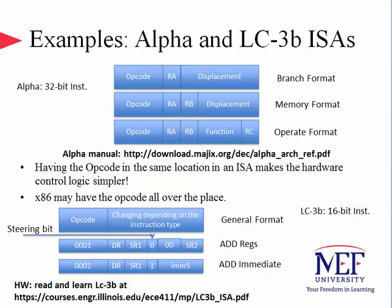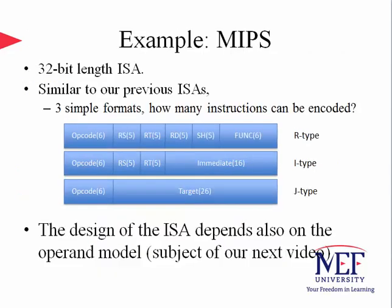Another RISC ISA is the 32-bit MIPS architecture. It has three simple formats — register, immediate, and jump — with an opcode of 6 bits. The shift amount (SH) field specifies the number of positions for shift operations. The immediate field can be used with branching operations, and the target field can update the program counter value to jump to another location. The design of the ISA depends heavily on the operand model, which will be covered in the next lecture.